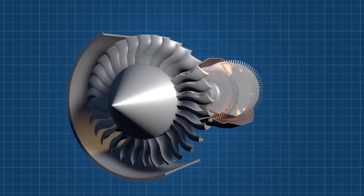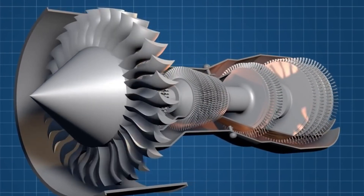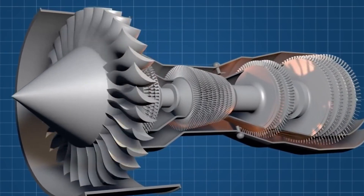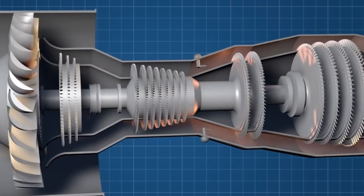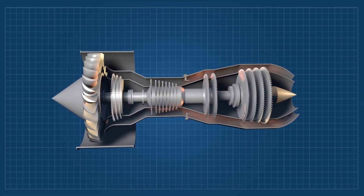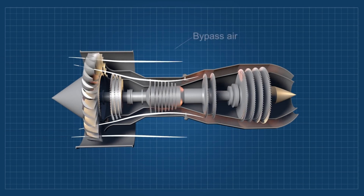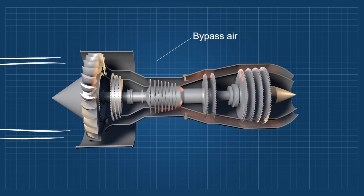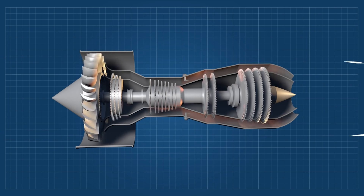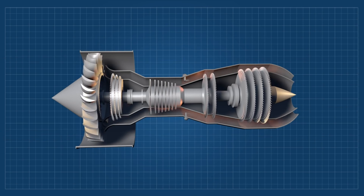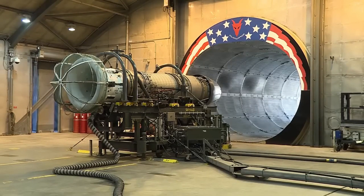A turbofan engine is much the same as a turbojet, but with an enlarged fan at the front that provides thrust in much the same way as a ducted propeller, resulting in improved fuel efficiency. Though the fan creates thrust like a propeller, the surrounding duct frees it from many of the restrictions that limit propeller performance.